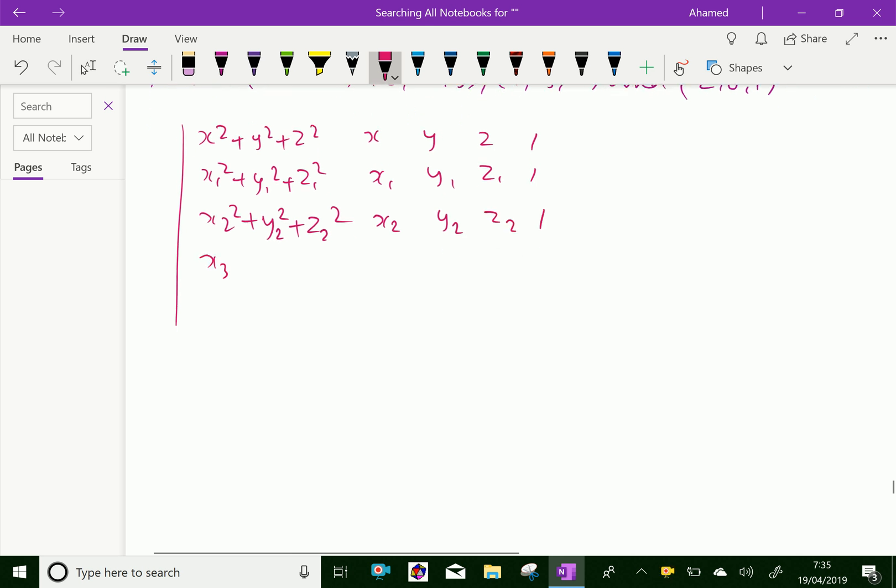x₃² + y₃² + z₃², x₃, y₃, z₃, 1; and x₄² + y₄² + z₄², x₄, y₄, z₄, 1 equals 0.